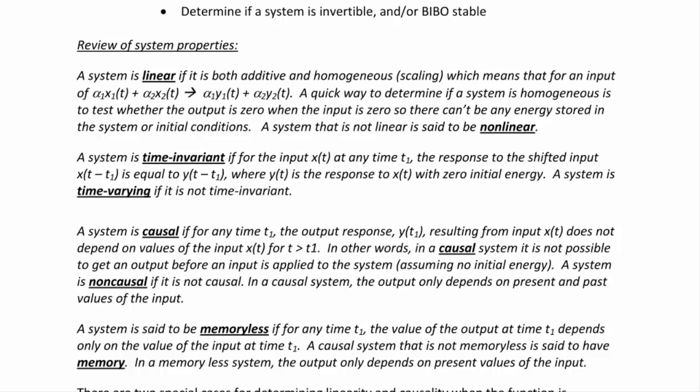Last lecture we determined whether a system was causal or memoryless. A system is causal if for any time t₁, the output y(t₁) does not depend on values of the input x(t) for t greater than t₁ — the output only depends on past up to the present value of x. A system is memoryless if the output at time t₁ depends only on the input at that exact same time t₁.